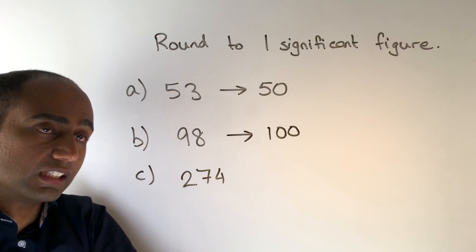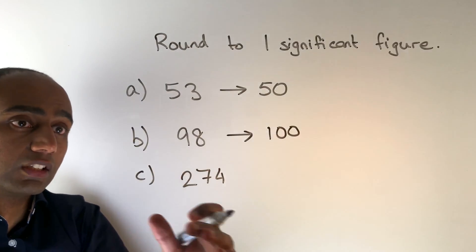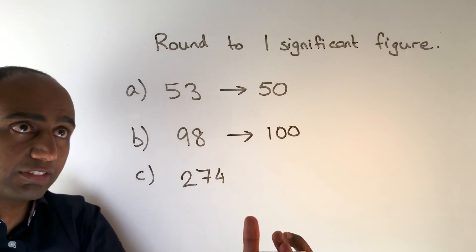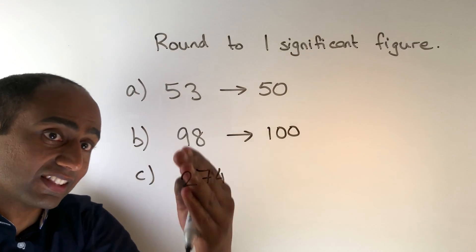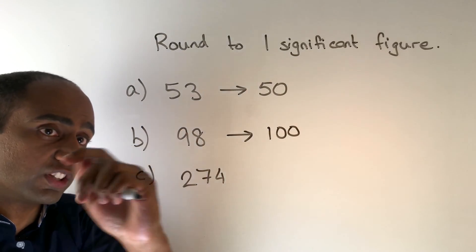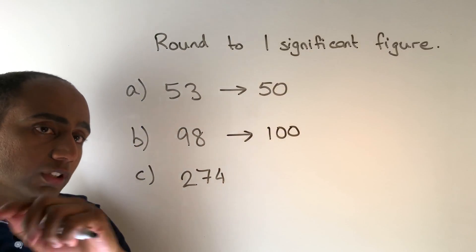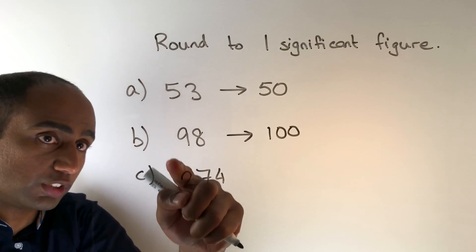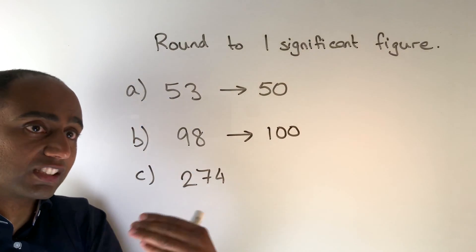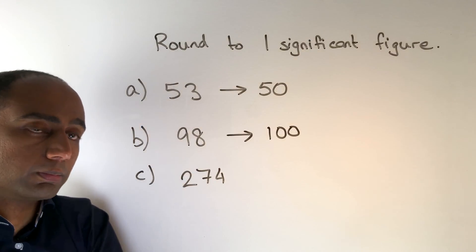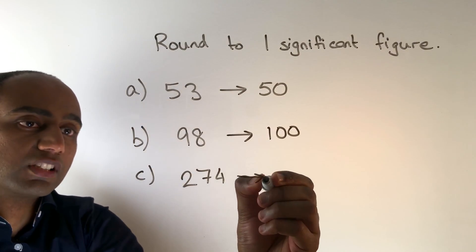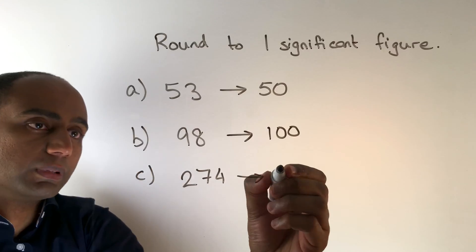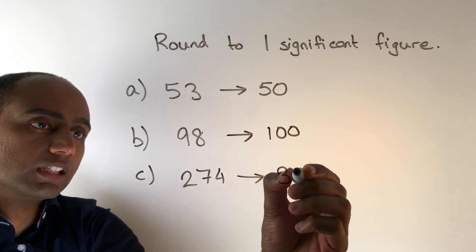In question C we are rounding to one significant figure again, and in this case that means we're rounding to the nearest hundred because the hundreds column is our biggest place value column. So to the nearest hundred that would be 300.